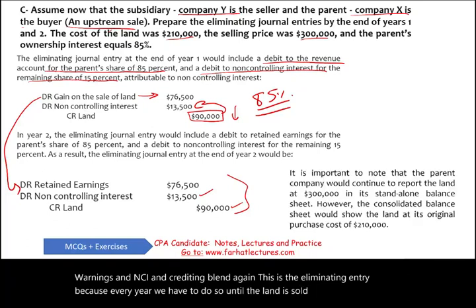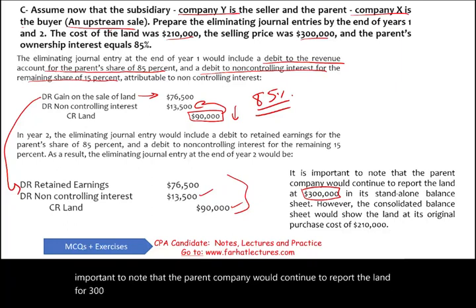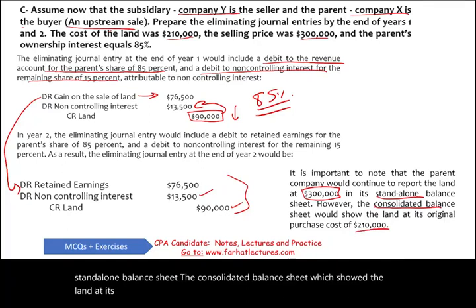It's important to know that the parent company would continue to report the land at $300,000 on its standalone balance sheet — because they bought it for $300,000. However, the consolidated balance sheet would show the land at its original cost of $210,000.